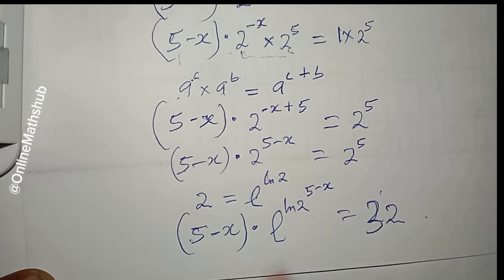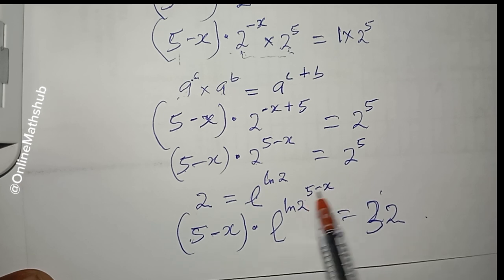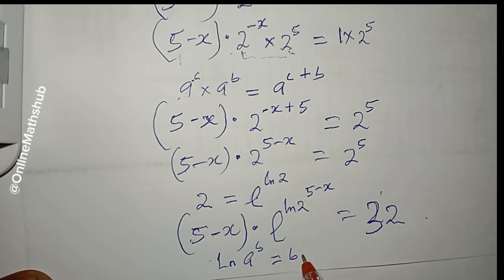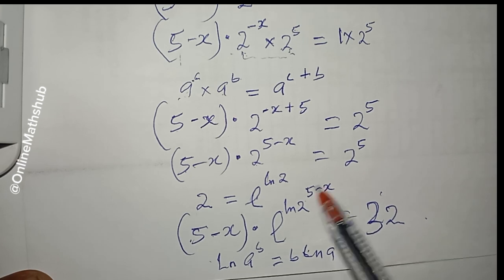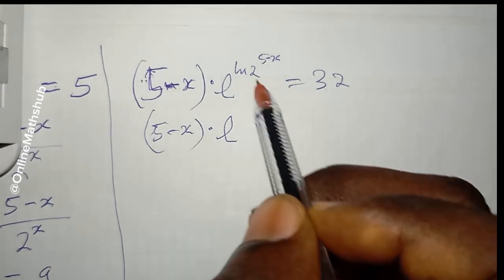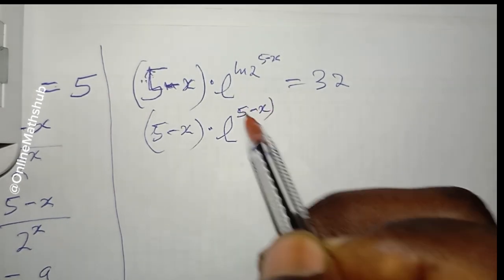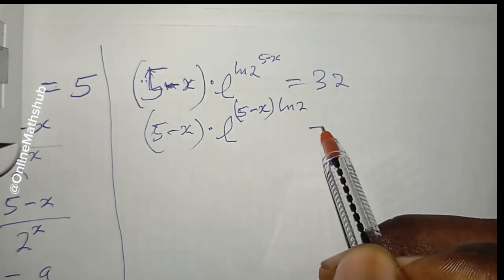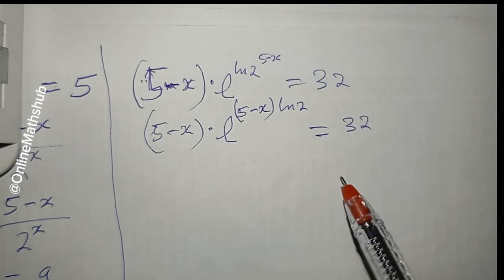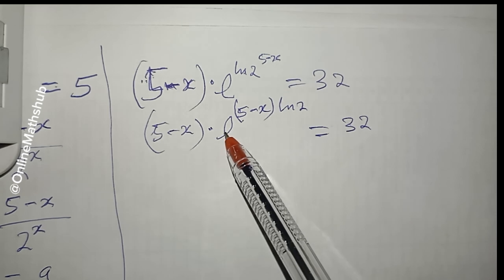Using the log power rule — ln(a^b) = b · ln(a) — we bring the power (5 − x) down. The equation becomes (5 − x) · e^((5 − x) · ln 2) = 32. We can see the exponential form is taking shape, but the coefficient and exponent need to match exactly.